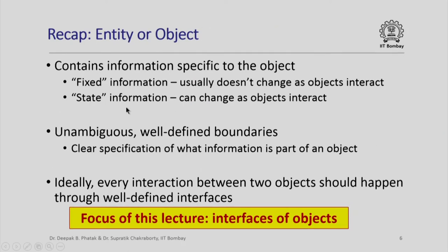Recall that we had also said that each entity or object is basically going to contain information specific to that object. This information could be fixed information which usually does not change as the objects interact, or it could be state information that changes as the objects interact. In any case, an object must have unambiguous, well-defined boundaries — it must be very clear what information is part of the object and what is not.